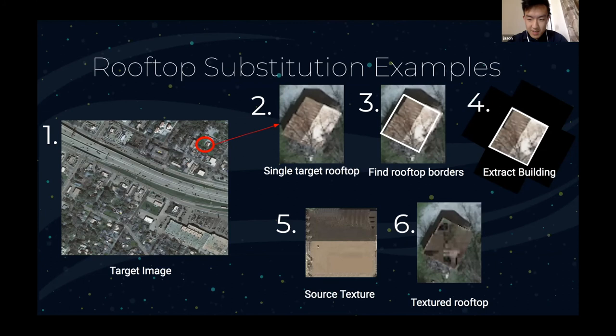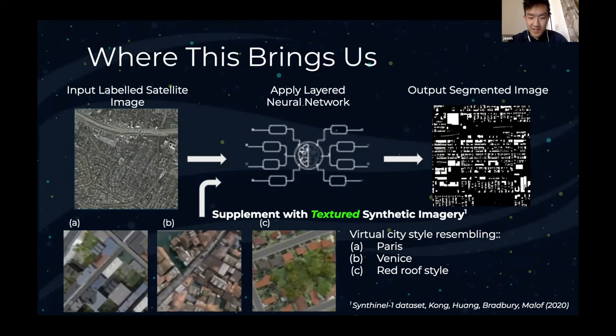So where does this bring us? At this point, we can supplement our real satellite imagery with textured synthetic imagery where the rooftops have been replaced. This will allow us to convincingly represent new regions and create more accurate building maps. As this research progresses, the team will expand this pipeline to other types of infrastructure besides buildings and eventually allow us to map out energy grids around the world.